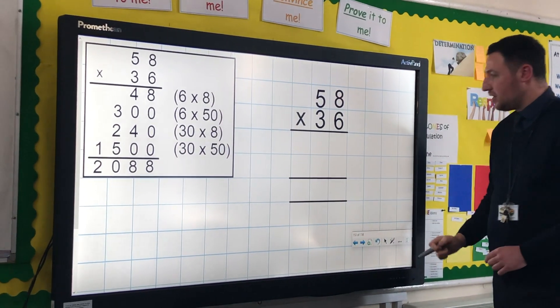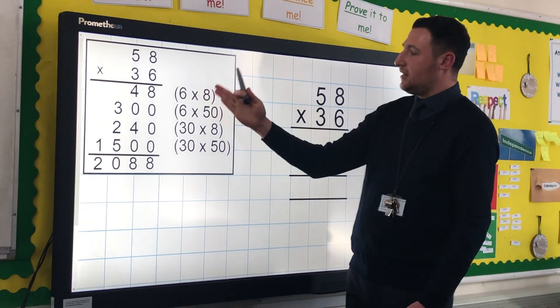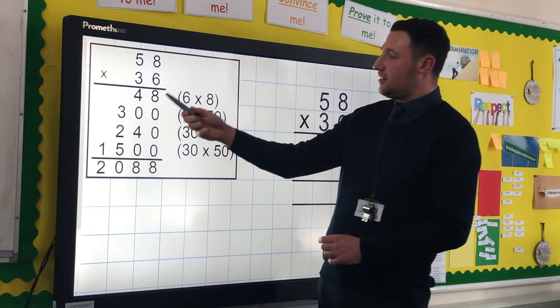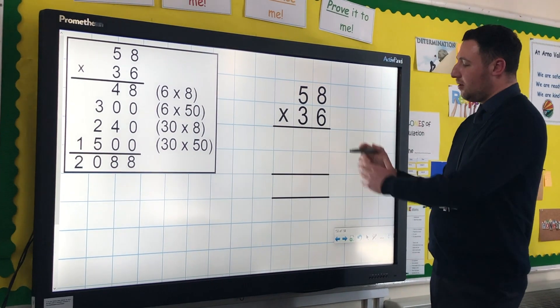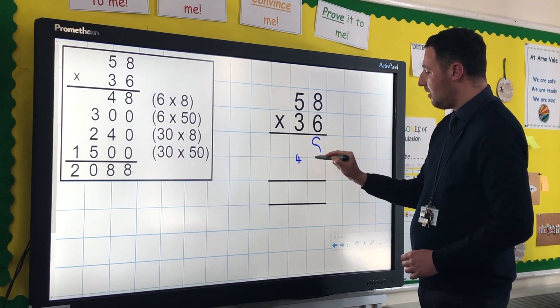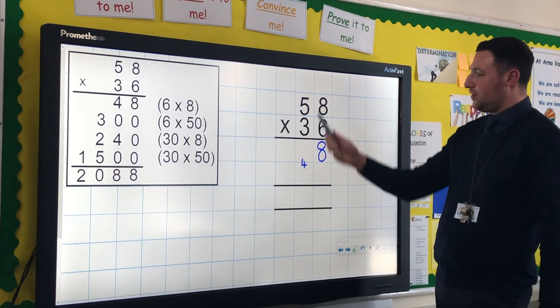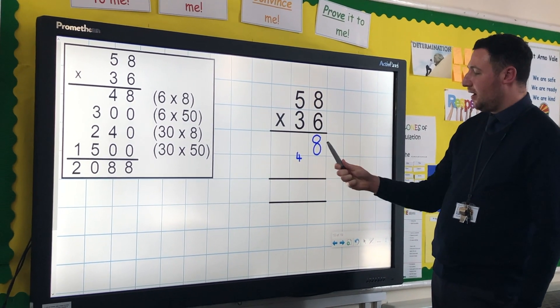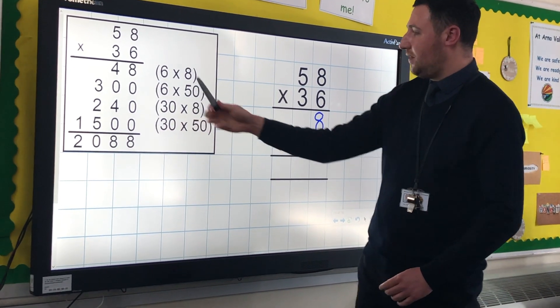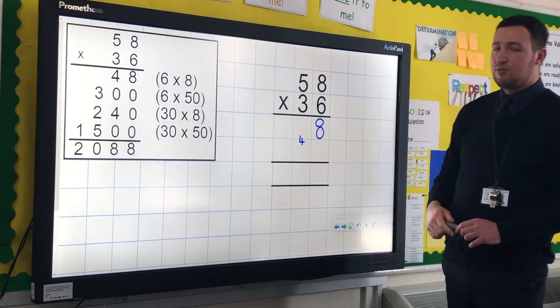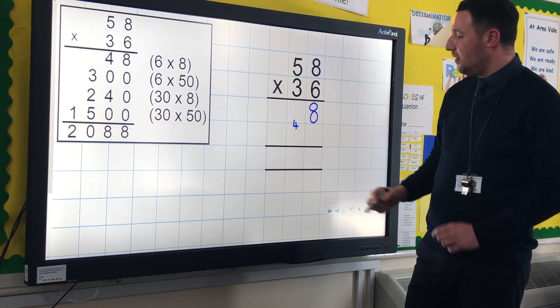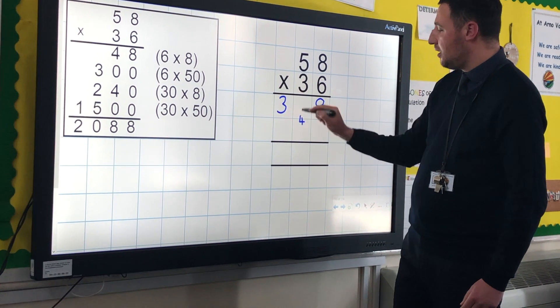So we're going to start in exactly the same way. Six lots of eight is 48, but this time instead of writing that in the tens and the units in separate squares, we're going to carry the tens over. So we've got four in the tens column carried over and eight units. We're then going to do six lots of 50. Six lots of 50 is 300, but then we're going to add on these tens that we carried over, so that would give us 340.